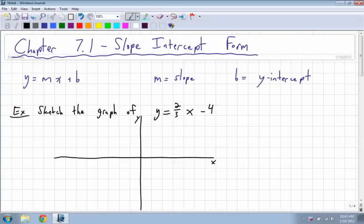Alright, chapter 7.1, slope-intercept form. So slope-intercept form looks like this: y equals mx plus b. m is your slope, and b is what is called your y-intercept.